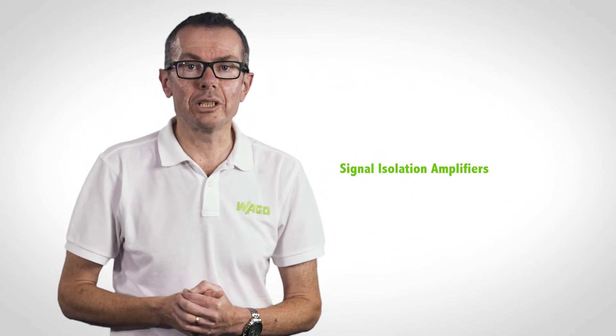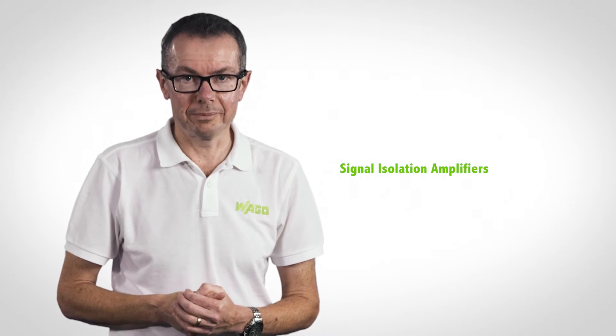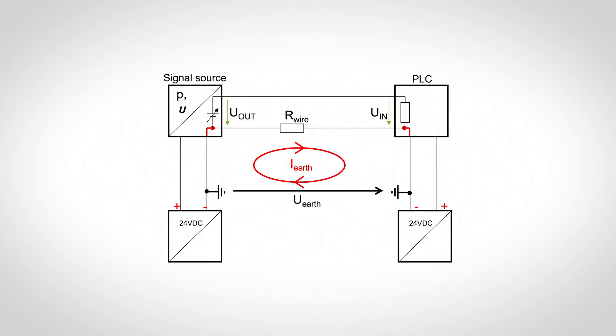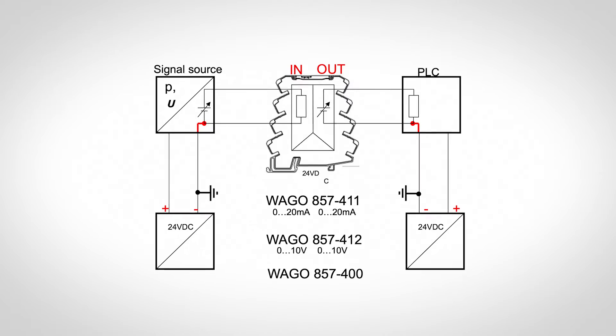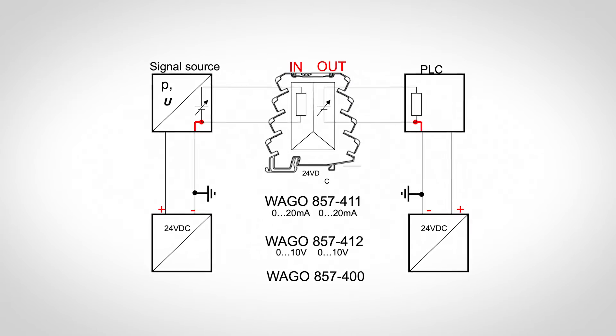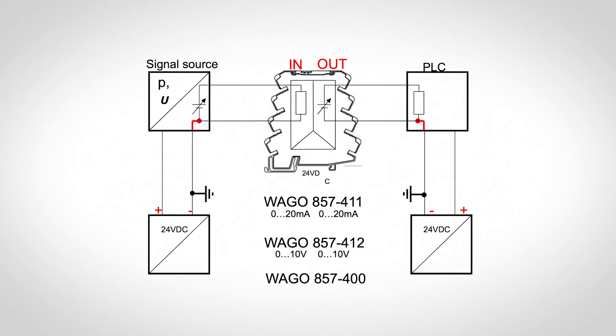Let's take a closer look at the various types. Signal isolation amplifiers: where two or more sets of equipment share the same DC power supply, there is a risk of a condition known as ground loops that can cause errors in signal measurements. By using signal isolation, this risk can be eliminated easily.